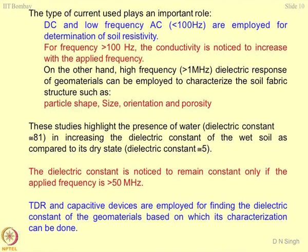The dielectric constant remains constant only if the applied frequency is more than 50 MHz. TDR and FDR devices — a capacitance probe and a TDR probe — are employed for finding the dielectric constant of materials, based on which their characterization can be carried out.